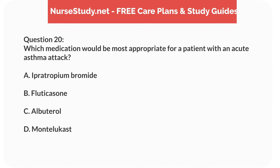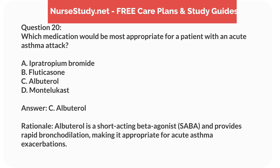Question 20. Which medication would be most appropriate for a patient with an acute asthma attack? A. Ipratropium bromide. B. Fluticasone. C. Albuterol. D. Montelukast. Answer: C. Albuterol. Rationale: Albuterol is a short-acting beta-agonist and provides rapid bronchodilation, making it appropriate for acute asthma exacerbations.